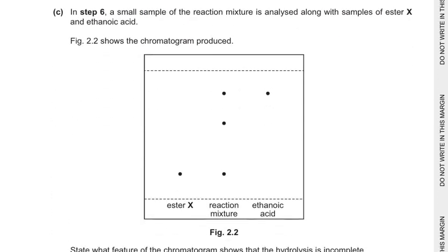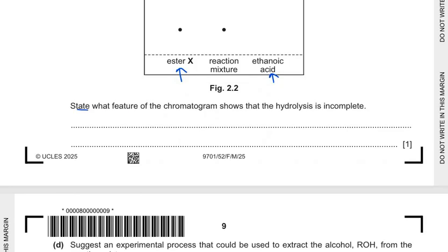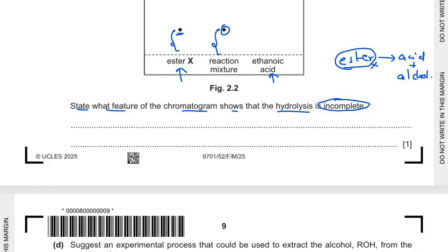In step 6 a small sample of the reaction mixture is analyzed along with the samples of ester X and ethanoic acid. We can see that here ester X and ethanoic acid is given and it shows a particular spot. A single spot is shown in the chromatogram. Now state what feature of the chromatogram shows that the hydrolysis is incomplete. Remember hydrolysis is incomplete. That is the ester is not fully broken down into acid and alcohol. That shows that if it is not fully hydrolyzed into acid and alcohol some of the reaction mixture should contain ester also. And yes we can see here that the ester which is here with the RF value we have got also one spot at the same RF value or the same distance.